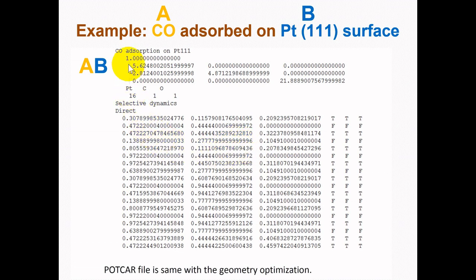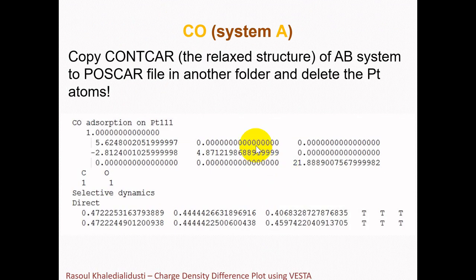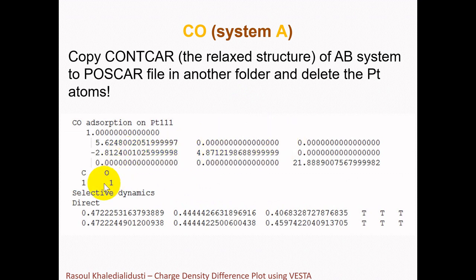As you can see, this is a carbon monoxide molecule adsorbed on the Platinum 111 surface — the relaxed structure of the AB system. To perform the electronic self-consistent calculation of the carbon monoxide molecule (system A), we need to copy the CONTCAR file of the relaxed AB system to the POSCAR file in another folder and delete the Platinum atoms. Now we have only two types of atoms — carbon and oxygen — with the atomic positions of the CO molecule relaxed on top of the surface. The POTCAR file should match the POSCAR file including only carbon and oxygen atoms.